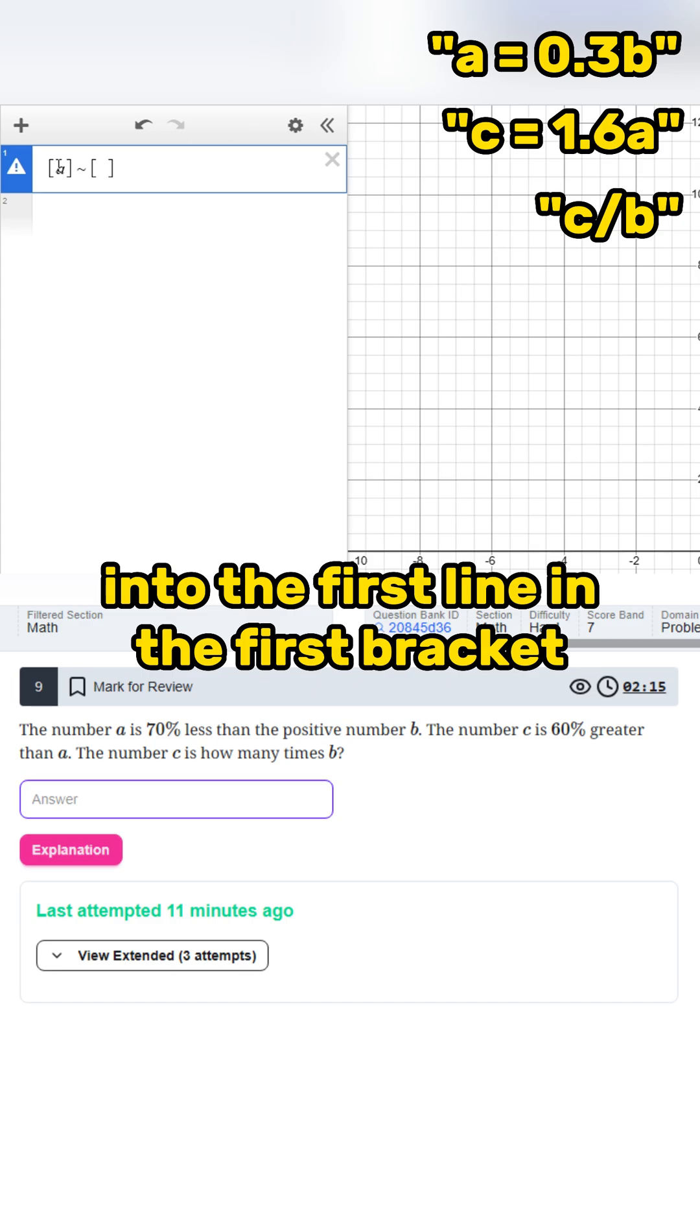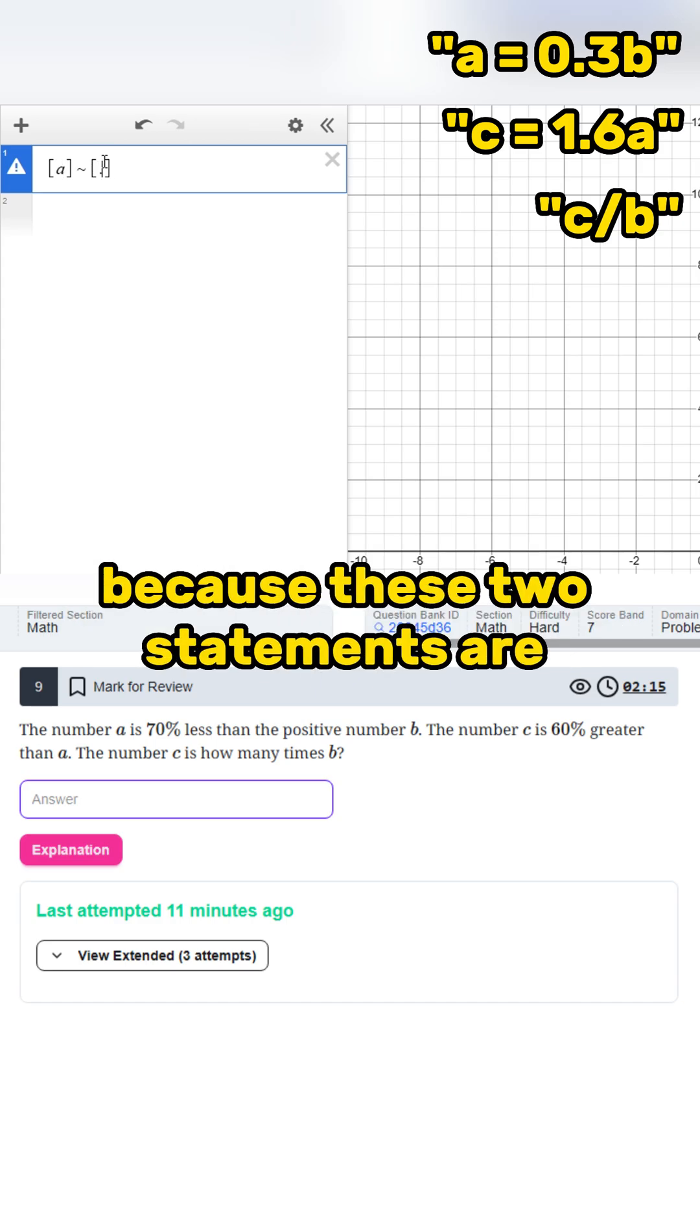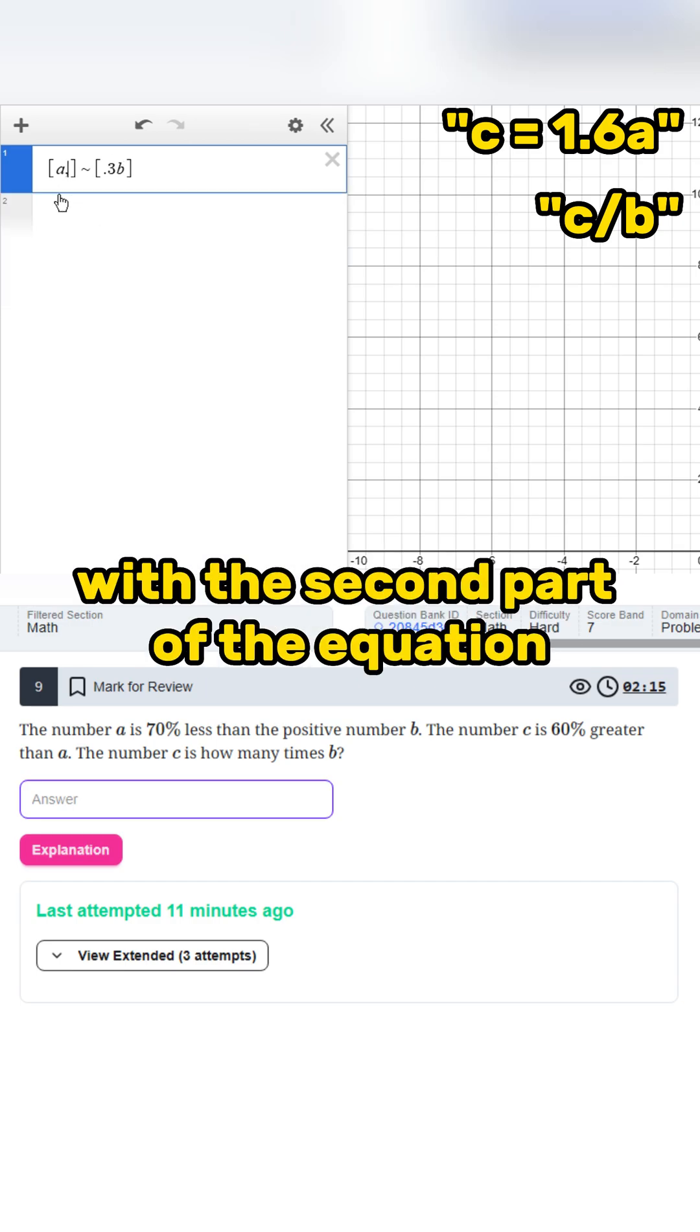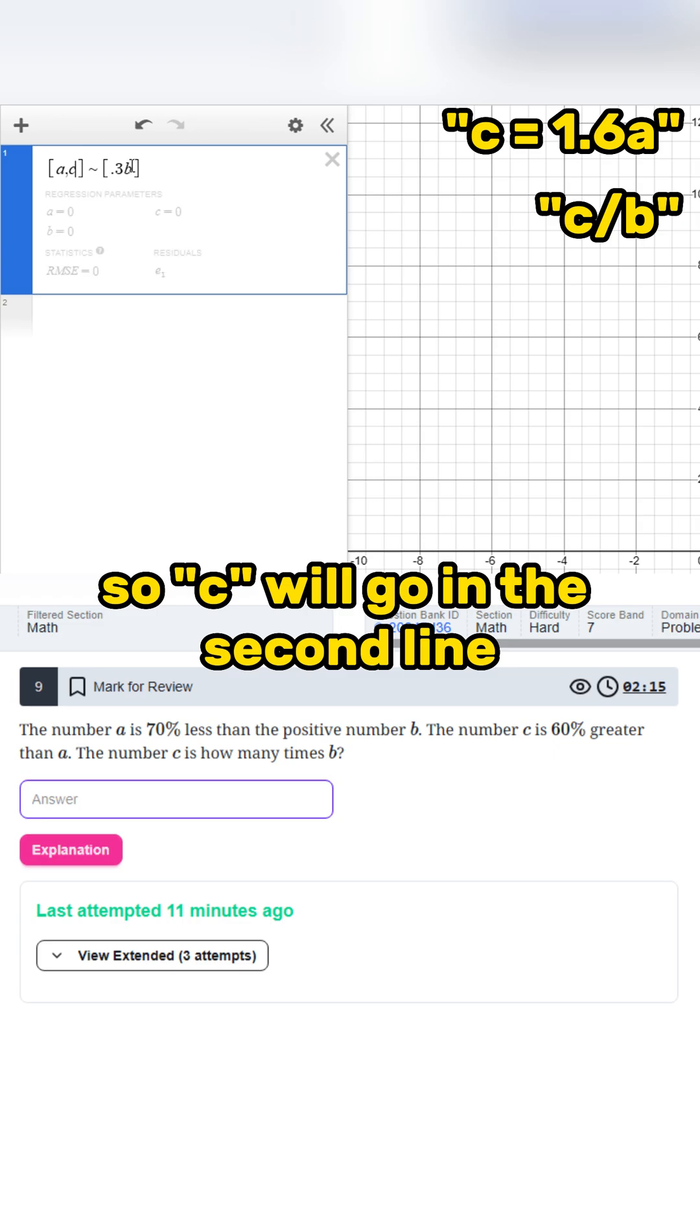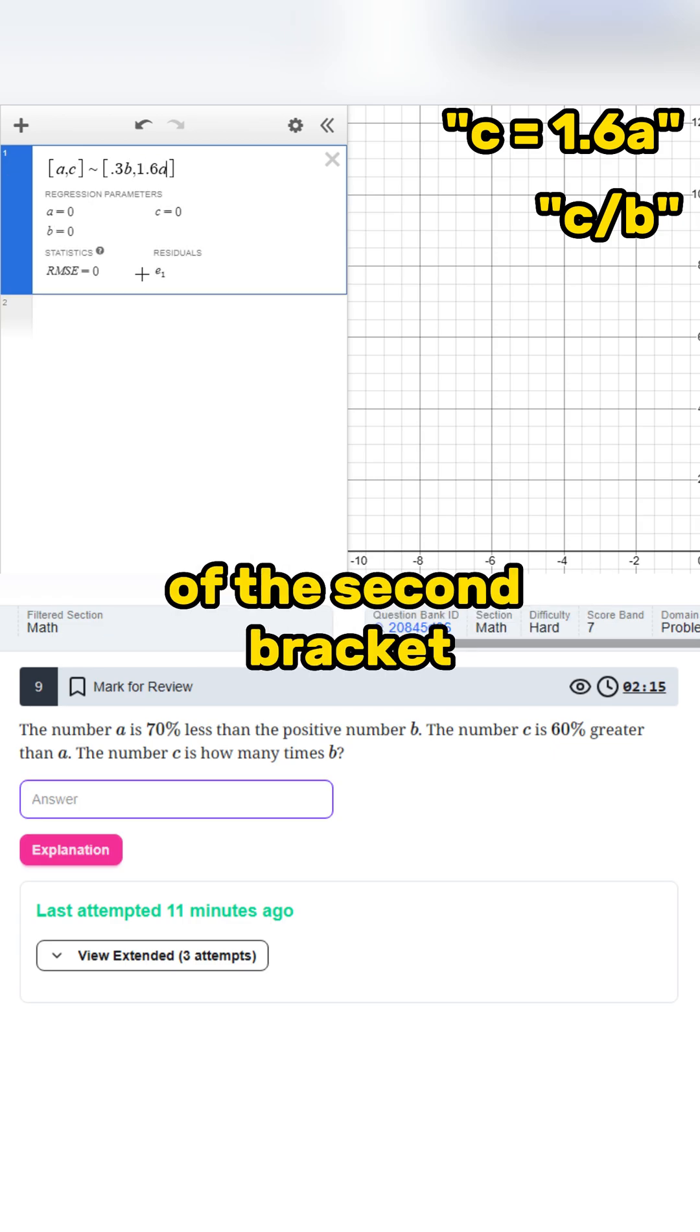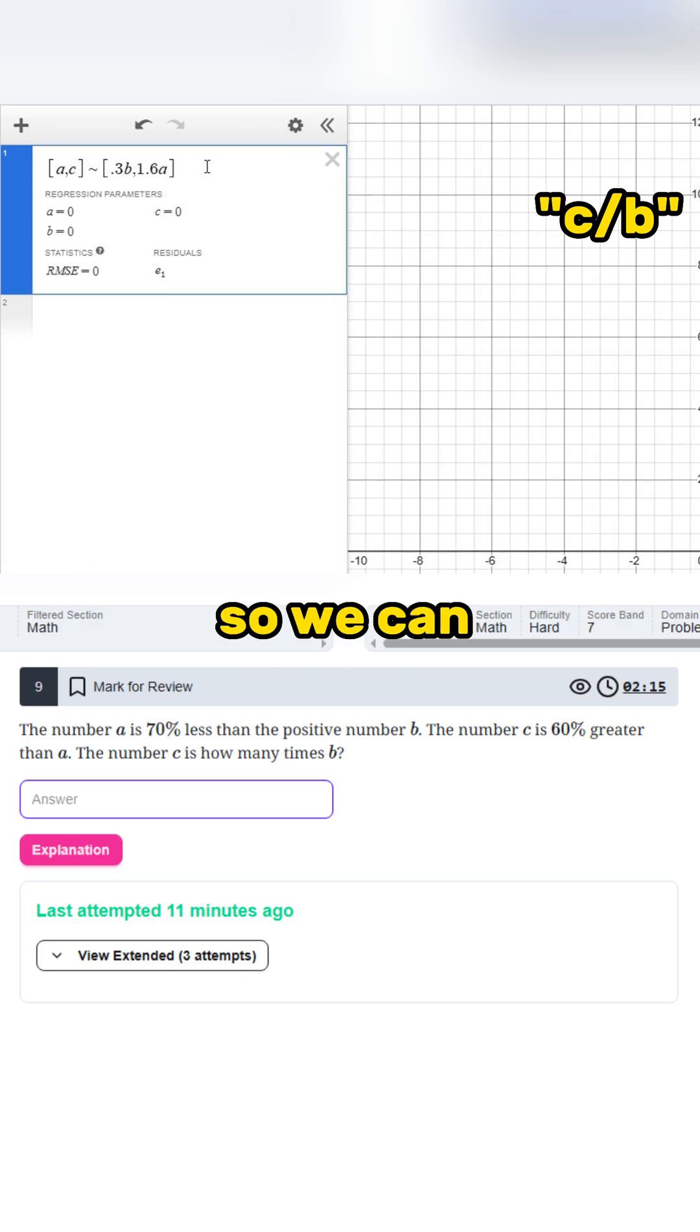Now we're just going to input A into the first line in the first bracket and 0.3B in the first line in the second bracket because these two statements are equivalent. Then we're going to do the same thing with the second part of the equation. So C will go in the second line of the first bracket, and 1.6A will go in the second line of the second bracket. This just tells Desmos what A and C are equal to in the same line, so we can combine values from two different but connected equations.